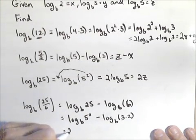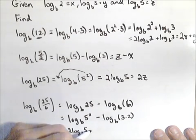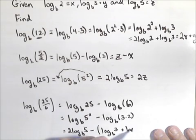So this first one is going to be 2 times log base b of 5 minus, and now I do need to put this in parentheses, log base b of 3 plus log base b of 2.